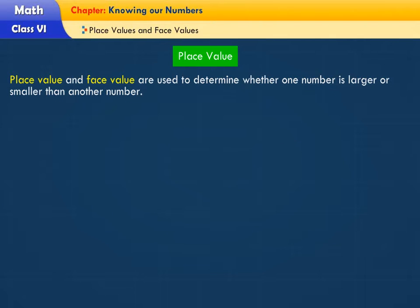Place value and face value are used to determine whether one number is larger or smaller than another number. For example, is 735 greater than or less than 794?